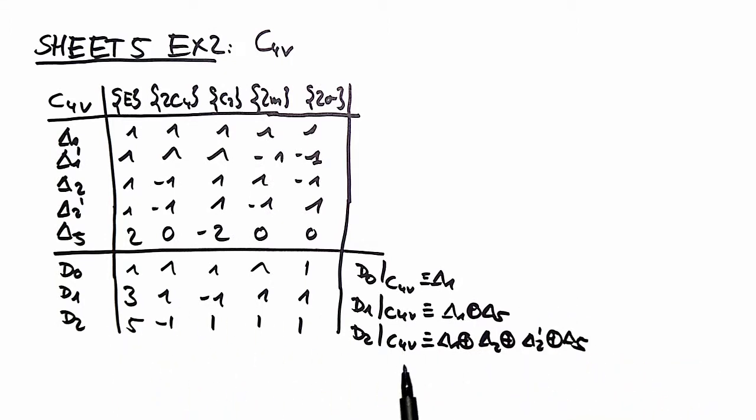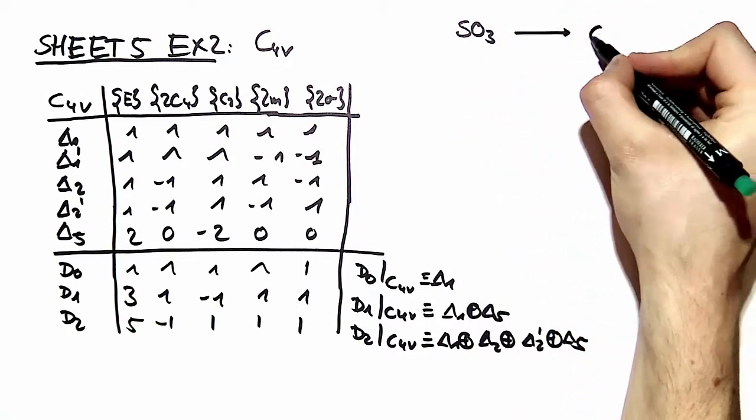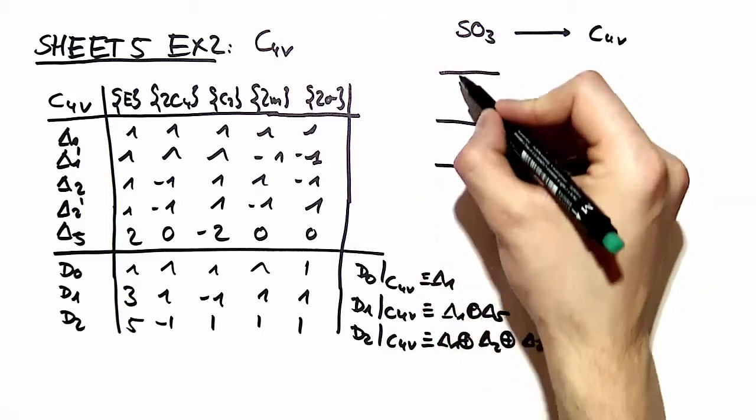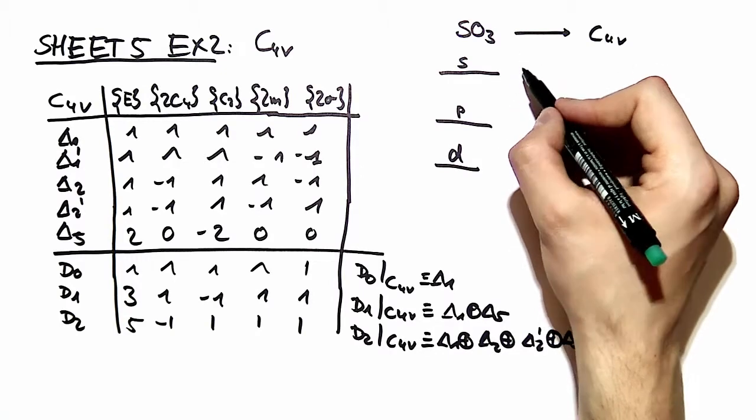You can check this by looking at the characters. So what do we have here? So when we have SO3 and we move to the C4v, our orbitals, the s, p, and d orbitals split like the following.